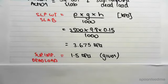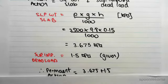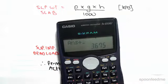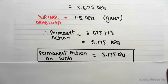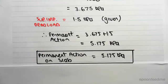The superimposed dead load was given to us in the problem as 1.5 kilopascals. So we just need to add those two things together. So 3.675 plus 1.5 gives us 5.175 kilopascals. So just putting that in the box, the permanent action on the slab is 5.175 kilopascals.